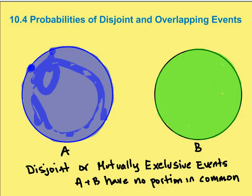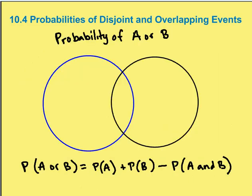So now we're ready to talk about the formula for probabilities of disjoint and overlapping events. The probability of disjoint and overlapping events is the probability of what we call A or B. And that equals the probability of A plus the probability of B minus the probability of A and B.